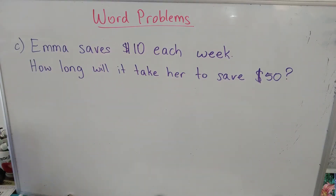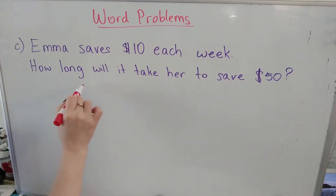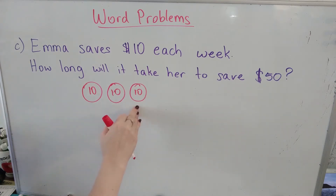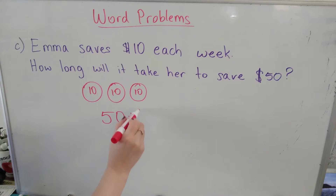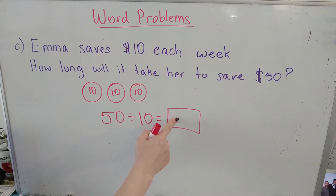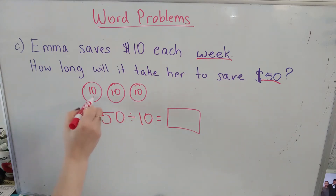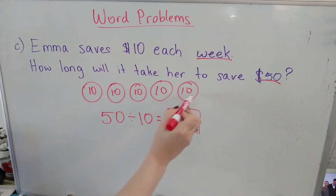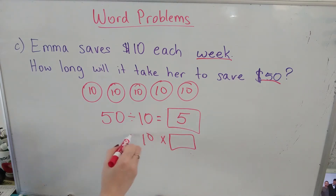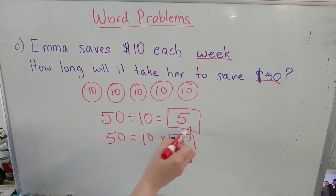Letter C. Emma saves $10 each week. How long will it take her to save $50? So she's saving $10 each week — week one, week two, week three. How many weeks does she need to reach 50? I'm going to divide by 10, sharing in groups of 10, to find how many groups of 10 are inside of 50. Simply count by tens until you reach 50: 10, 20, 30, 40, 50 — that's 5 groups, or 5 weeks. Or you could say 5 times 10 equals 50.